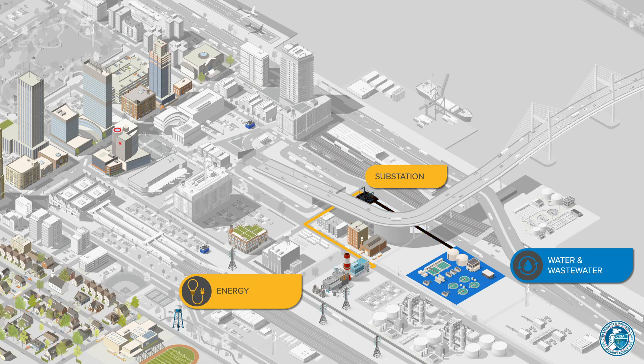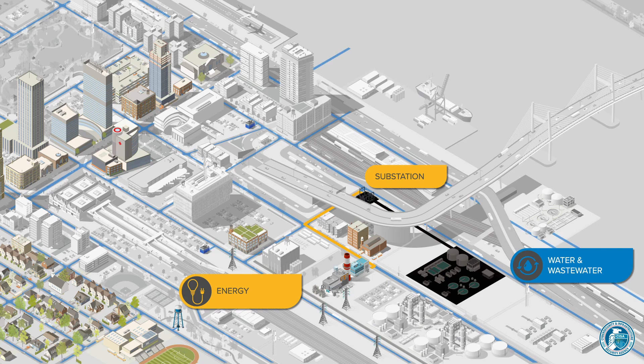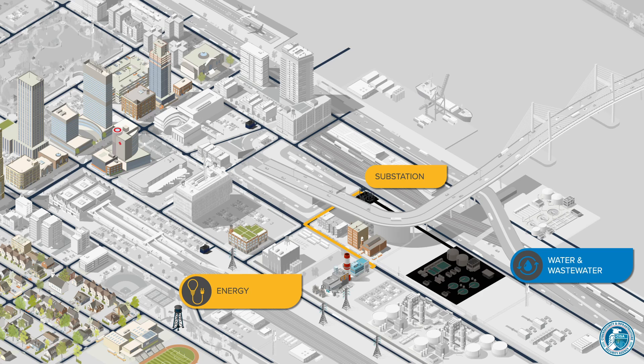If the water treatment plant does not have a backup generator or connection to a secondary substation, it will be unable to perform the treatment or pumping processes necessary to produce potable water and feed it into the water system. Without clean water to replenish existing storage within the system, boil orders must be issued and some users may experience reduced service.